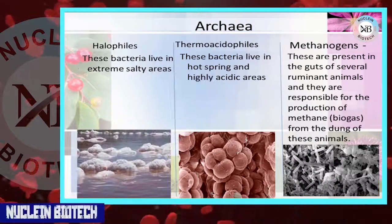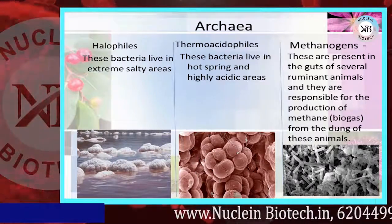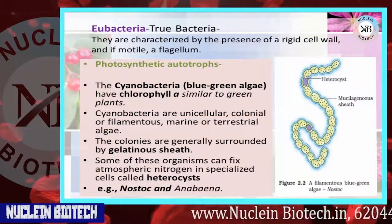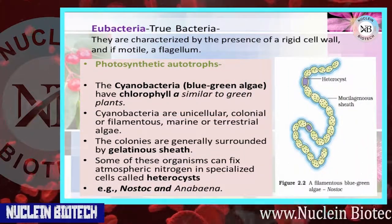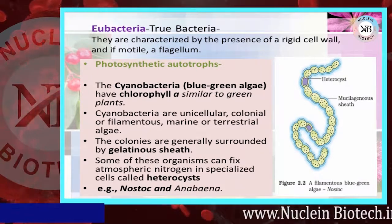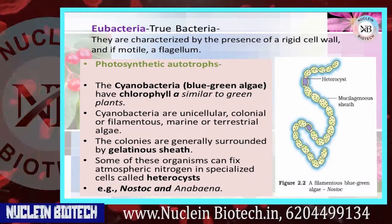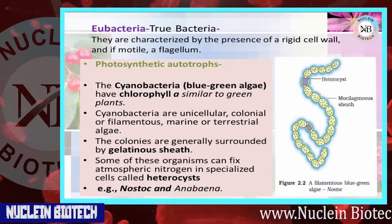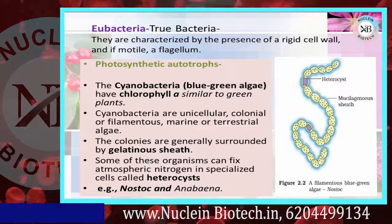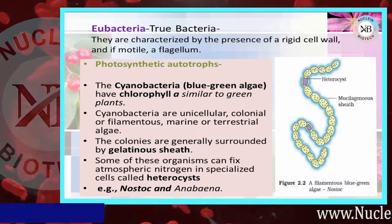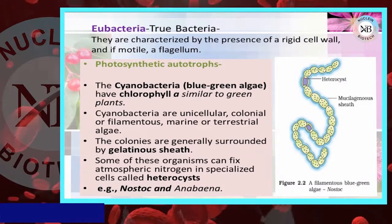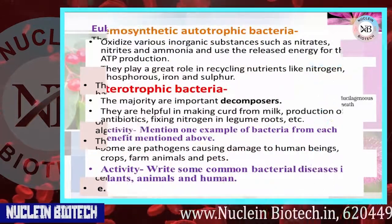Archaebacteria live in extreme salty areas. Eubacteria, also known as true bacteria, are characterized by the presence of a rigid cell wall and if motile, a flagellum. Photosynthetic autotrophs — the cyanobacteria, or blue-green algae — have chlorophyll a similar to green plants. Cyanobacteria are unicellular, colonial, or filamentous marine or terrestrial algae.